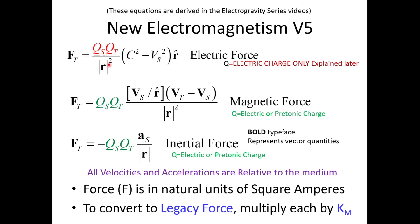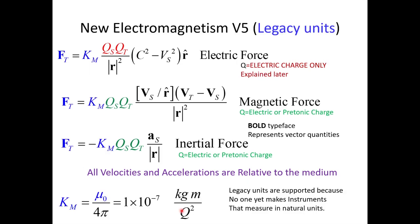This is the Electric Force Model, this is the Magnetic Force Model, and this is the Inertial Force Model. The units of force here are square amperes, which is the natural unit of force. To convert to legacy force, you multiply each by Km, where Km is mu over 4 pi. This gives New Electromagnetism V5 in legacy units of Newtons — kilogram meters per second squared. The Coulombs cancel out and you get the legacy unit. That's how you convert between legacy and natural units.